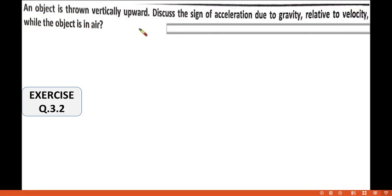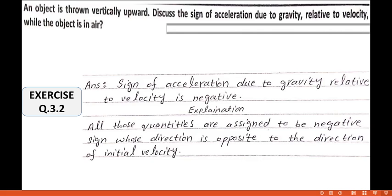An object is thrown vertically upward. Discuss the sign of acceleration due to gravity relative to velocity while the object is in air. So in this case we want to find the sign of acceleration due to gravity. It means when an object is thrown vertically upward, what is the sign of the acceleration?